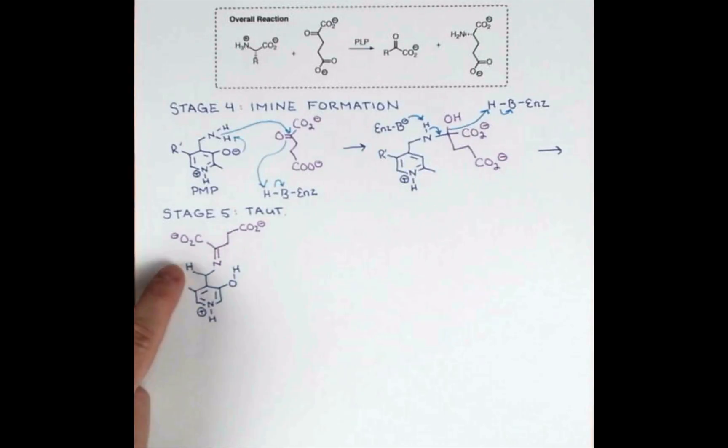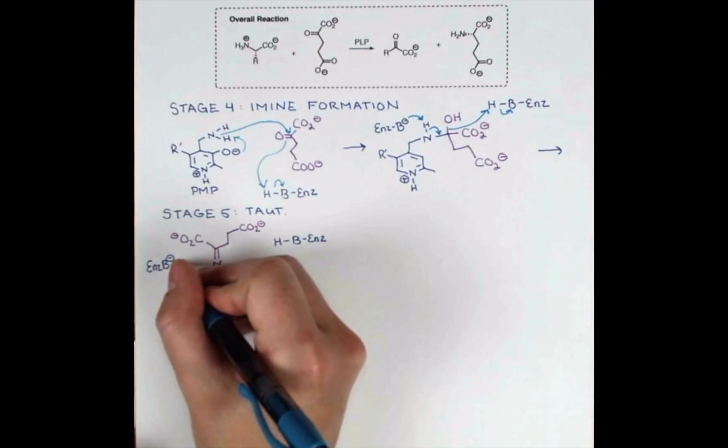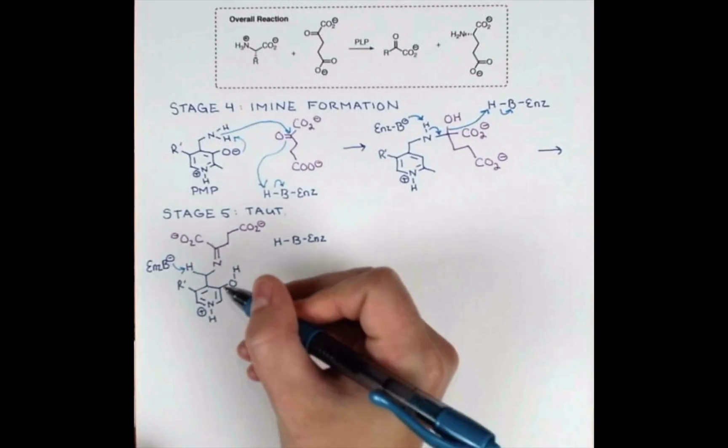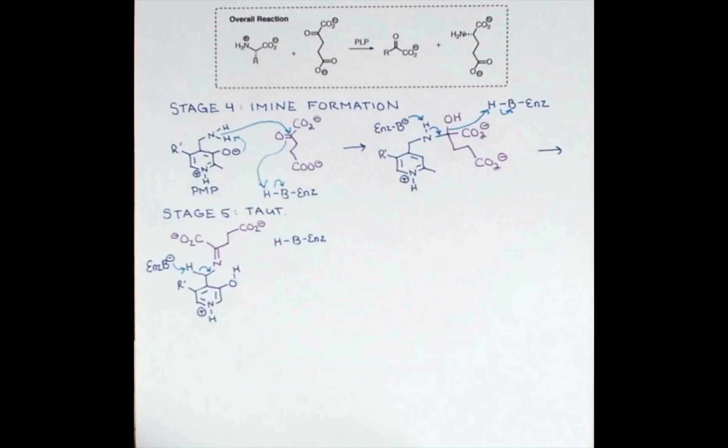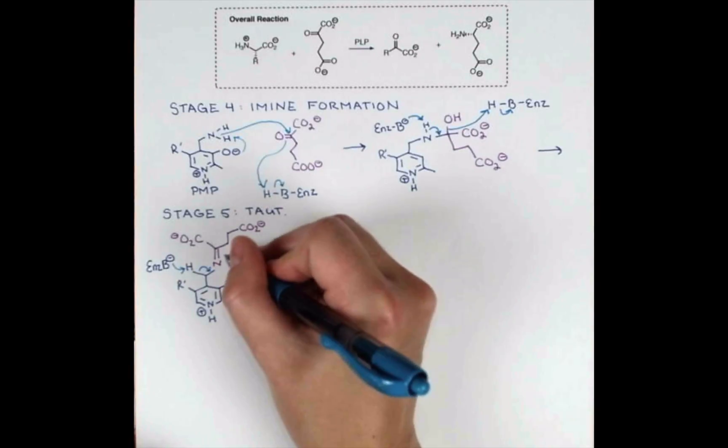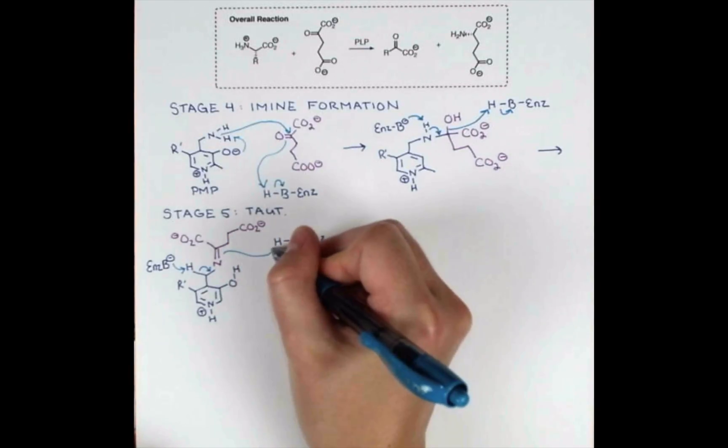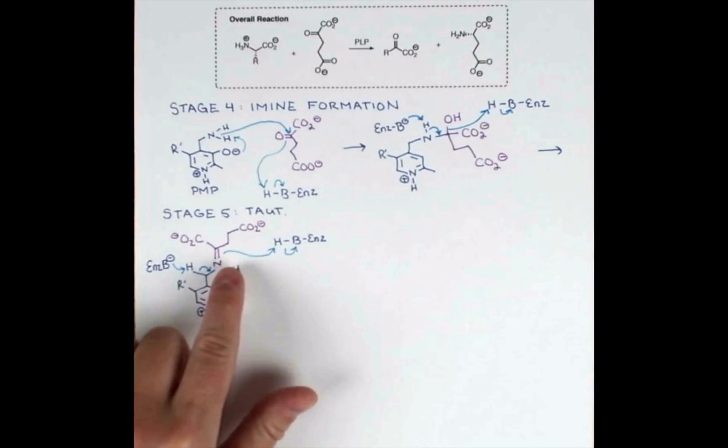A basic enzyme residue will deprotonate here, and we'll be able to push electrons through, grabbing a proton onto the carbon of this amine. So we'll protonate here, push these electrons to make a new amine, and protonate this double bond.